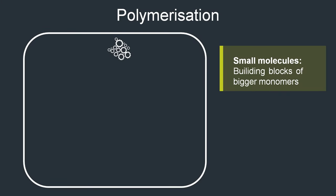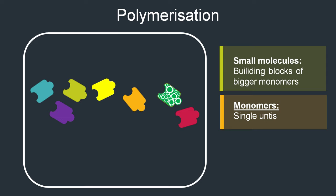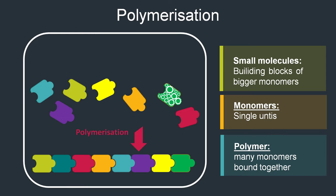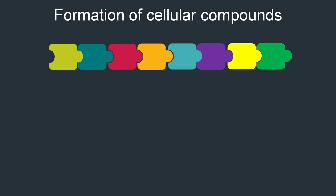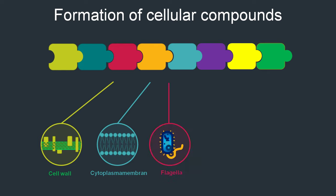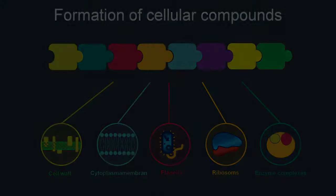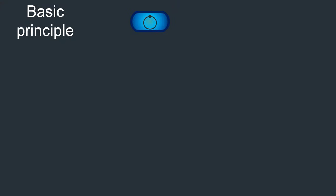Some of these chemical reactions synthesize different co-factors and co-enzymes essential for enzymatic reactions in cell division, while others deliver small molecules acting as building blocks for bigger monomers. These monomers are chained together in a polymerization reaction to form more complex molecules, which can form cellular compounds like the cell wall, cytoplasma membrane, flagella, ribosomes, or other larger enzyme complexes.